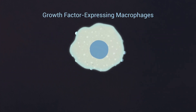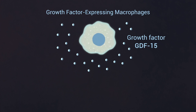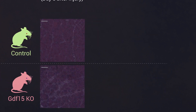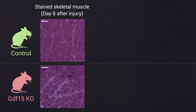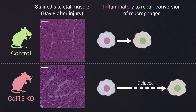We identified the secreted growth factor GDF-15, a divergent member of the TGF-beta superfamily, acting both on proliferating myoblasts and muscle-infiltrating myeloid cells. Deletion of GDF-15 in mice showed a pronounced delay in skeletal muscle regeneration and delayed the inflammatory to repair subtype conversion of macrophages.